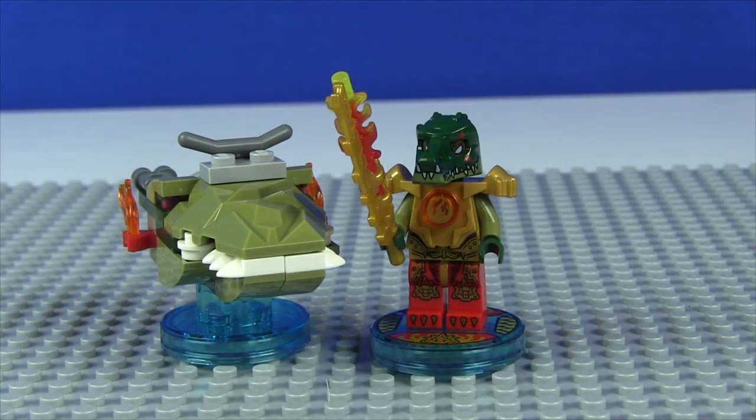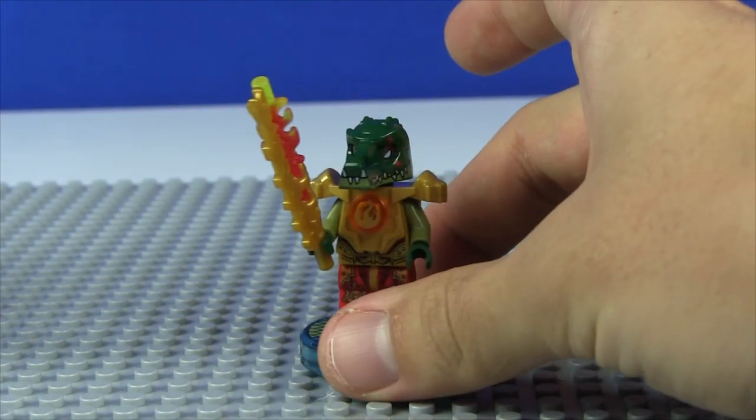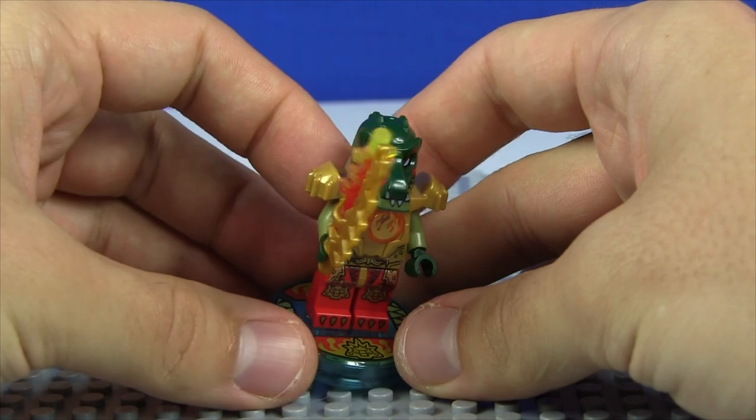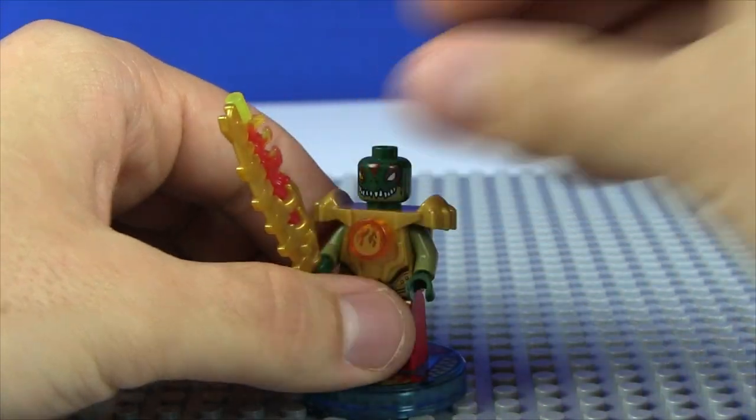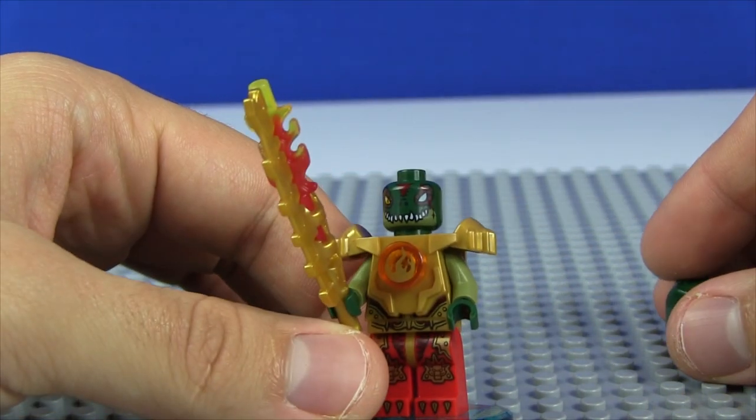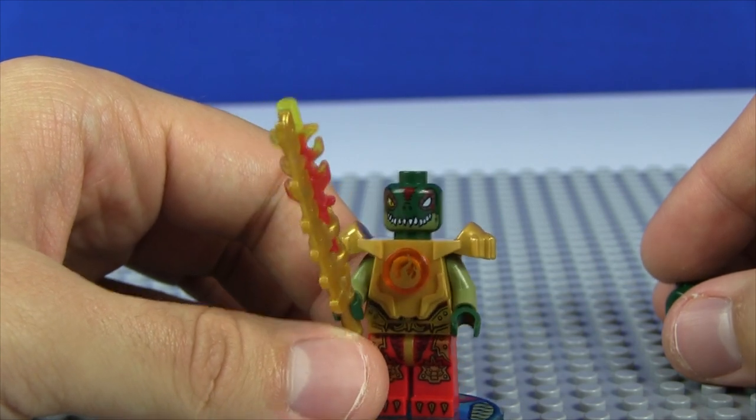Alrighty, guys. So here is the Swamp Skimmer and Kragger himself fully assembled. Let's take a look at Kragger first. And my googly-boogly is this figure pretty intimidating. Look at that face. That's a face only a mother can love. That's for sure. Look at that. That is terrifying.